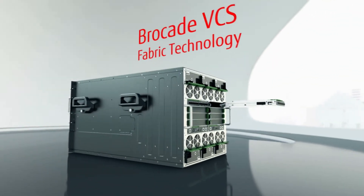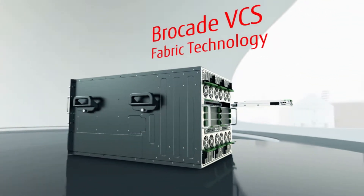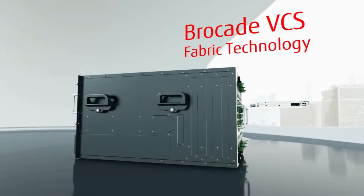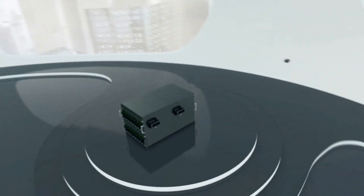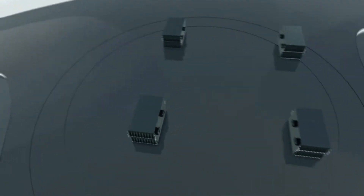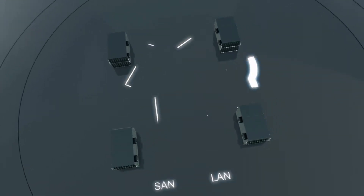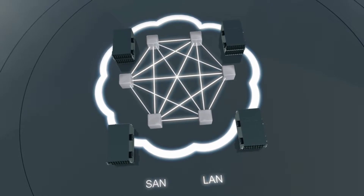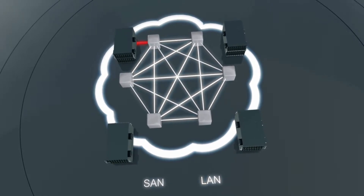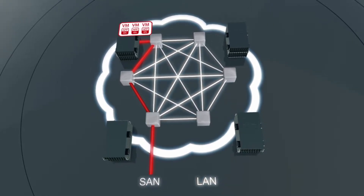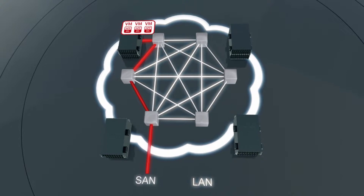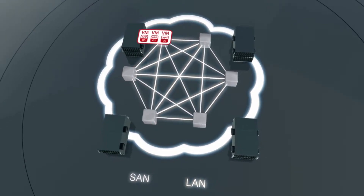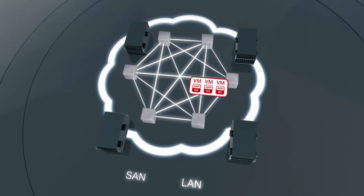Featuring Brocade's award-winning VCS fabric technology, the VDX2730 lets you add active-active server connections across the entire Fujitsu Dynamic Fabric infrastructure, without changing your existing network designs and cabling. And by automatically sharing intelligence between fabric nodes, you can dramatically improve network utilization and maximize application availability in virtualized data centers.